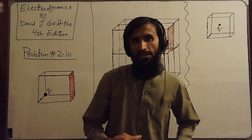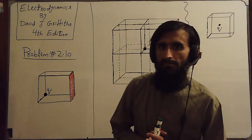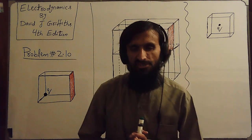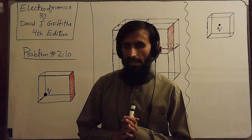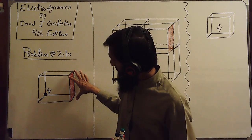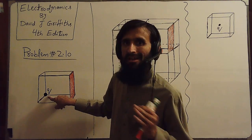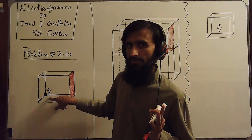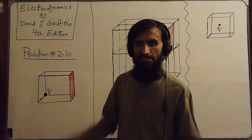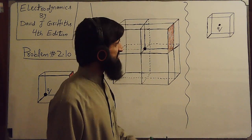Assalamu alaikum. Hello students, today we have to solve problem number 2.10 of Electrodynamics, fourth edition by David J. Griffiths. In this problem we have been given a cube and a charge q placed at its back corner, and we have been asked to find the electric flux through this shaded face.